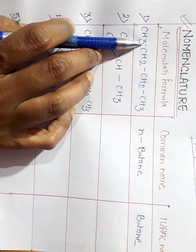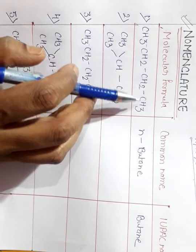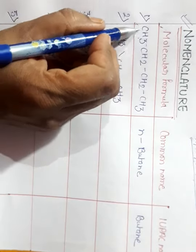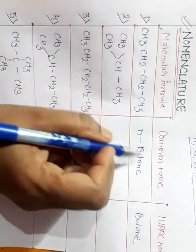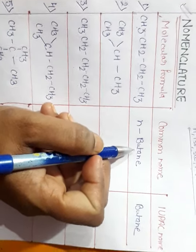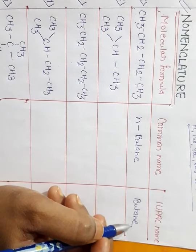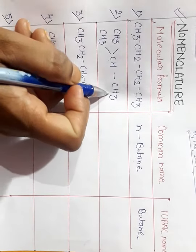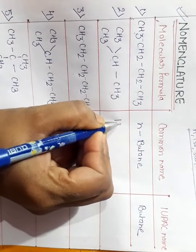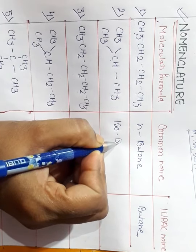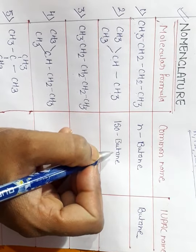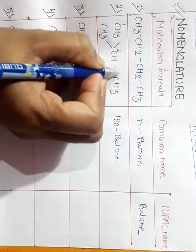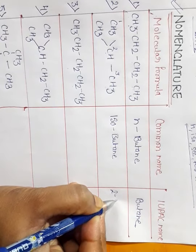The first compound is CH3–CH2–CH2–CH3. The number of carbon atoms is 1, 2, 3, 4 — so it has 4 carbon atoms. Its common name is normal butane and its IUPAC name is simply butane. The second compound is the branched structure; its common name is isobutane.